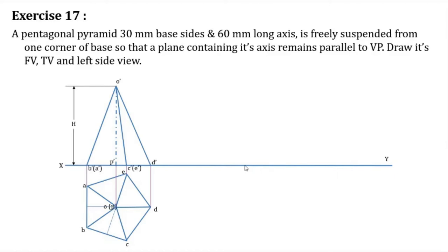The front view is completed with all the points: A dash, B dash, C dash, D dash, E dash. P dash is the centroid of the base and the second endpoint of the axis. The axis runs from the apex to the centroid of the base. O dash is the apex. D dash is the point from which we are going to keep the pyramid suspended.